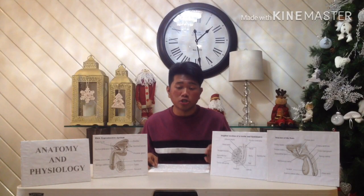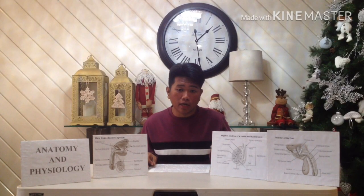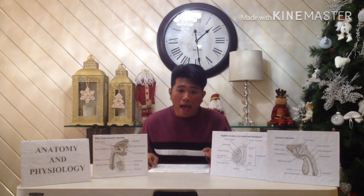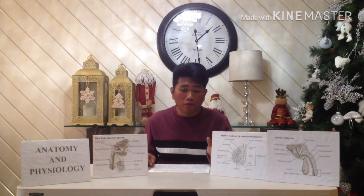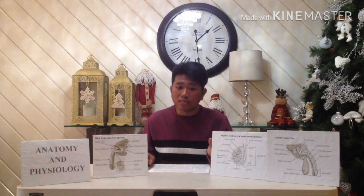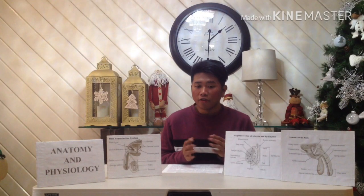During spermatogenesis there are two cellular divisions but only one replication of DNA, so that each spermatid has 23 chromosomes — one from each pair in the original primary spermatocyte. Each successive stage in spermatogenesis is pushed toward the center of the tubule, so the more immature cells are at the periphery and the more differentiated cells are near the center. Spermatogenesis differs from mitosis because the resulting cells have only half the number of chromosomes as the original cell. When the sperm cell nucleus unites with an egg cell nucleus, the full number of chromosomes is restored.